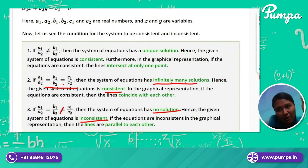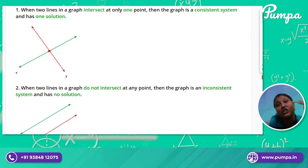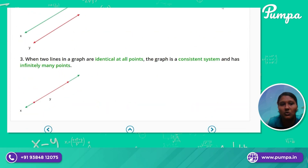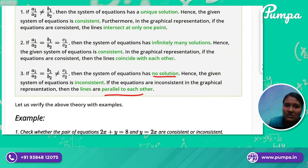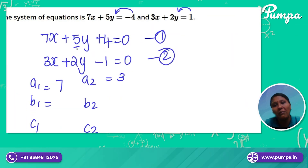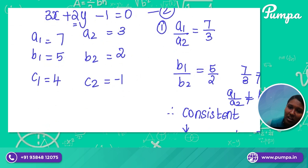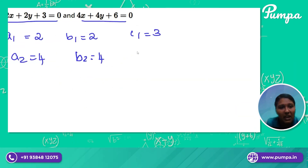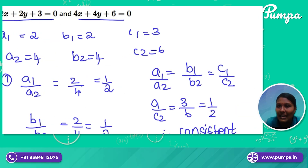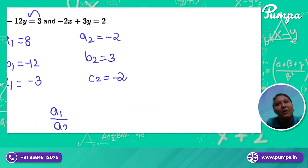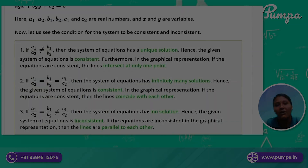So first, you need to check the coefficient of x-order ratio, y-order ratio. You need to check the standard format. If you need to check the standard format, you need to check A1 by A2, B1 by B2 — they need to be equal. That's the concept.